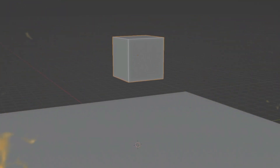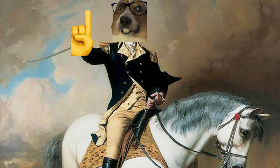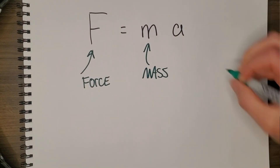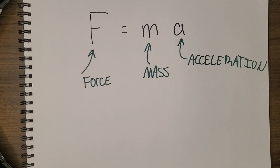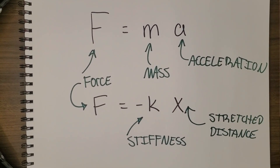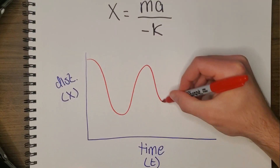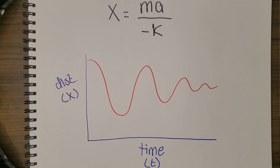My first attempt at soft body sims were less than good. Nonetheless I pushed forth - turn off goal, max out bending, max out stiffness, make sure your push is higher than your pull unless you want things to go wrong. If you remember from applied differential equations: springs are defined by some force which is the stretched distance times the stiffness of the spring. All you need to know is F equals MA and F also equals negative KX, so X the distance of your spring equals this - which looks like this.